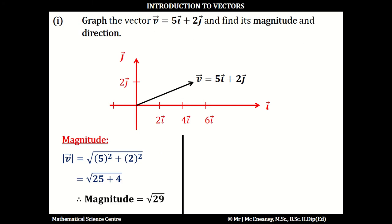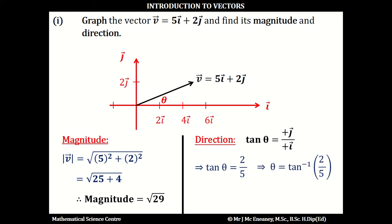If we want to get the direction, the tan of theta is the positive j over the positive i, and the angle theta is the angle relative to the i-axis. So for this vector, the tan of theta is going to be 2 over 5. This means theta is inverse tan of 2 fifths, and the angle theta is 21.8 degrees. So a positive i means east. The vector then makes an angle of 21.8 degrees towards the north because it's a positive j. So the direction is east, 21.8 degrees north.